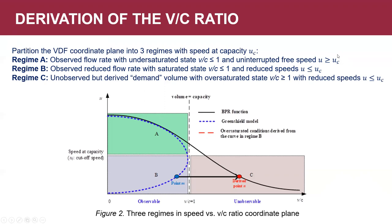Regime A is observed flow rate with the under-saturated state of V-over-C less than one. Regime B is also observed flow rate with the saturated state of V-over-C less than one but with reduced speeds, meaning U is less than speed at capacity. Regime C, the most mysterious part, is almost unobserved and represents derived demand volume with the oversaturated state of V-over-C larger than one with reduced speed. The key problem of BPR function calibration is to map point M in regime B to point N in regime C.